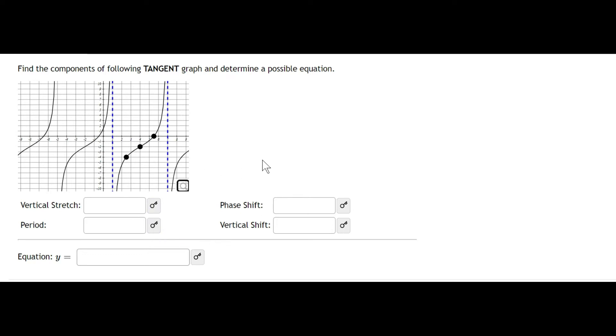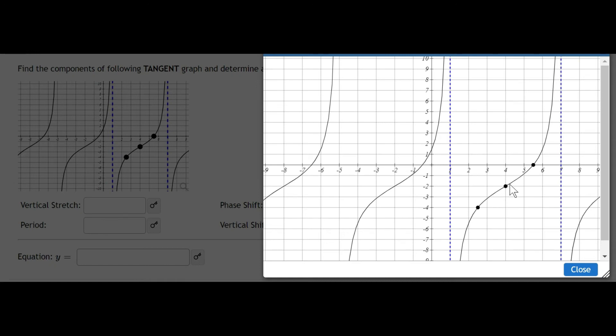With tangent, the easiest components to find first are your phase shift and your vertical shift. Both of these are going to be based on what's called the inflection point. So we're going to make this a little bit bigger. So the inflection point is going to be this point right here. So anytime you're given three points with a tangent graph, it's always going to be the one in the center.